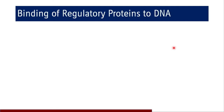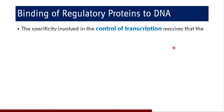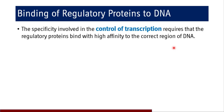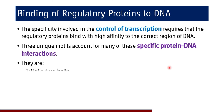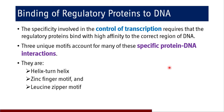There is also a role of specific regulatory proteins which bind to DNA and affect gene regulation. The specificity involved in the control of transcription requires regulatory proteins that bind with high affinity to the correct region of DNA. Three unique motifs account for many of these specific protein-DNA interactions: they are the helix-turn-helix, zinc finger motif, and leucine zipper motif.